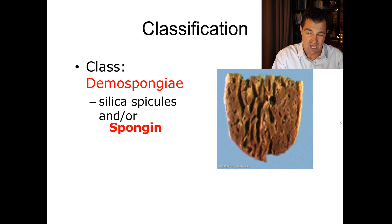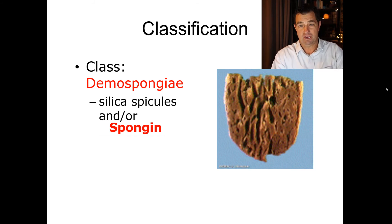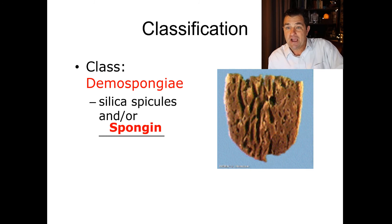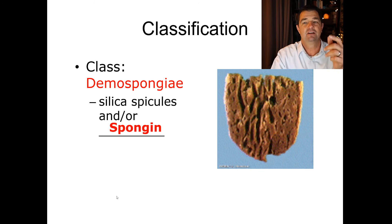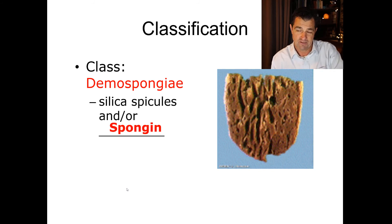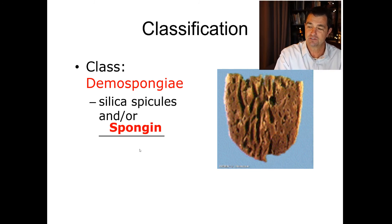If you look at a Demospongia, it actually looks like a sponge. The sponge you use at home — the synthetic one — is made from cellulose, but in older movies you'll see people using what looks like this kind of sponge. That was a real living organism that died and dried out, leaving behind the spongin skeleton. That's where the original concept of a sponge came from, and we've since made artificial ones based on that model.